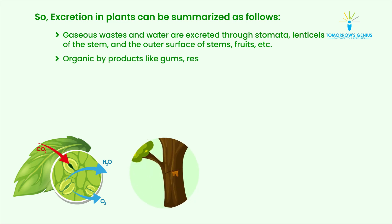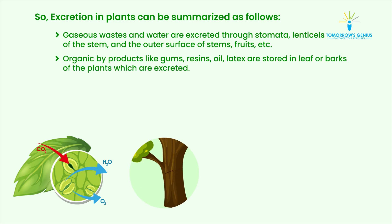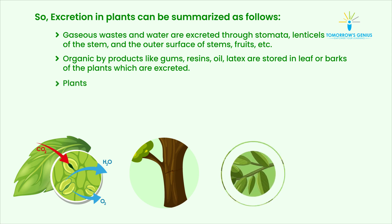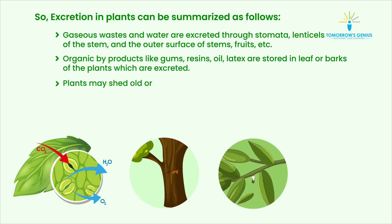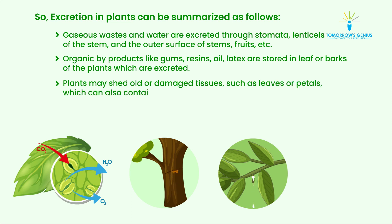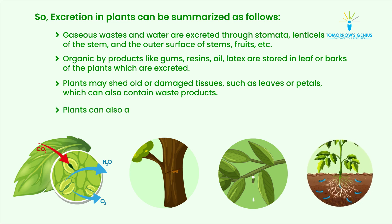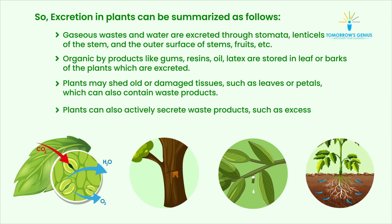Organic by-products like gums, resins, oil, and latex are stored in leaves or barks of the plant and are then excreted. Plants may shed off old or damaged tissues such as leaves or petals, which can also contain waste products. Plants can also actively secrete waste products such as excess salts out of their roots or other tissues.